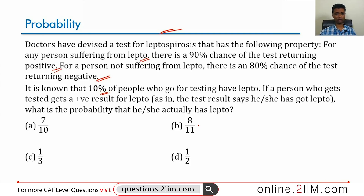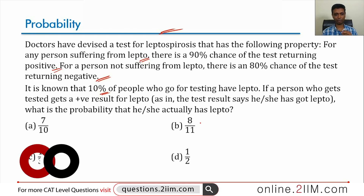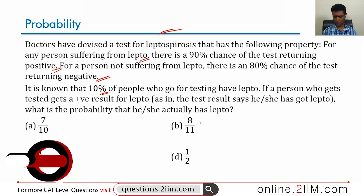A person who gets tested receives a positive result for lepto — meaning the result says the person has lepto. What is the probability that he or she actually has lepto? Even if results say you have the disease, there is still a probability involved — it could be a false positive. The question is: how good is the test? If the test says positive, what is the chance the person actually has lepto?